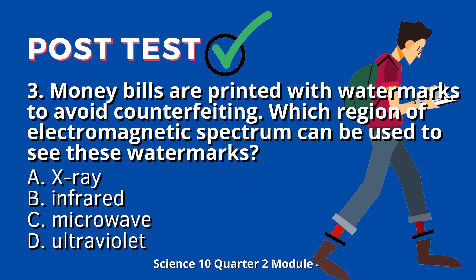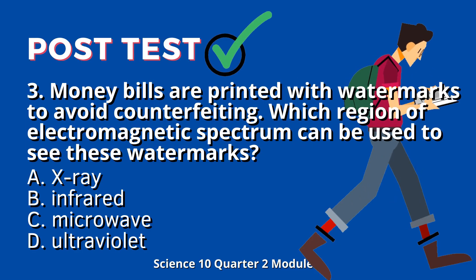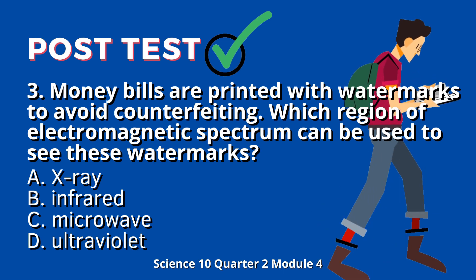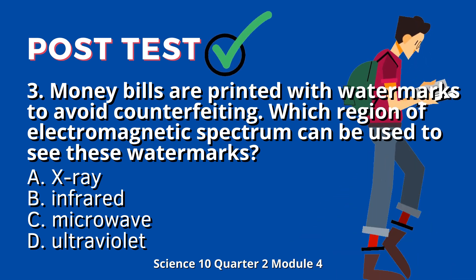Question 3: Money bills are printed with watermarks to avoid counterfeiting. Which region of the electromagnetic spectrum can be used to see these watermarks? A. X-ray. B. Infrared. C. Microwave. D. Ultraviolet.